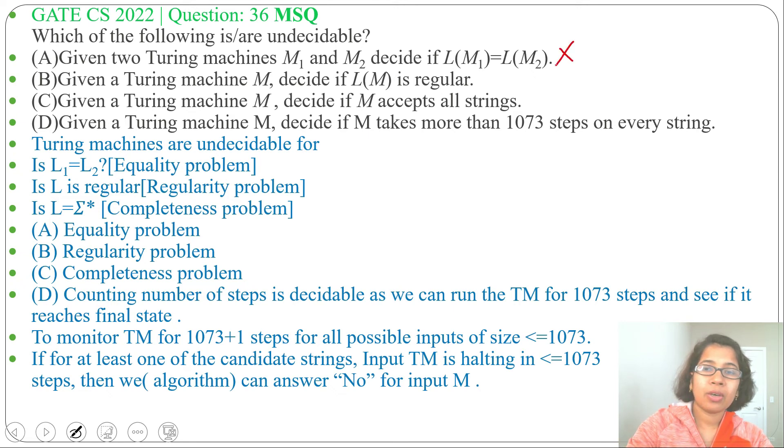We found option A is undecidable, option B is undecidable, option C is undecidable, while option D is decidable. As the question is asking which of the following is or are undecidable, so the answer will be A, B, and C.